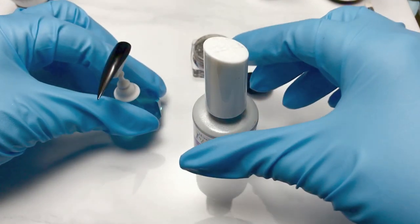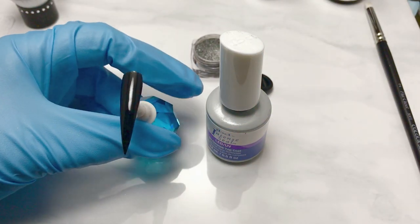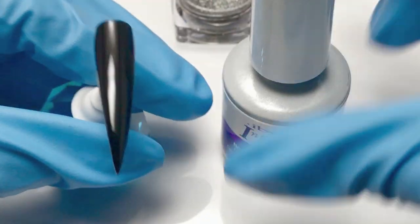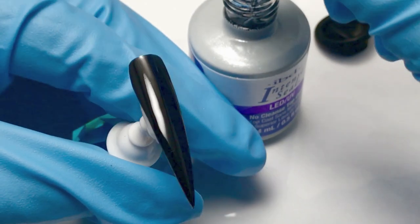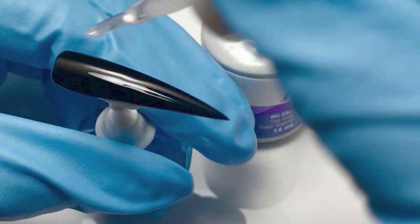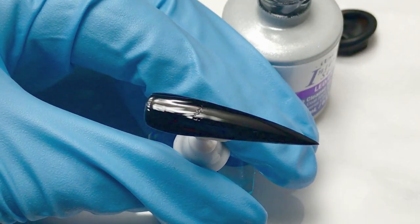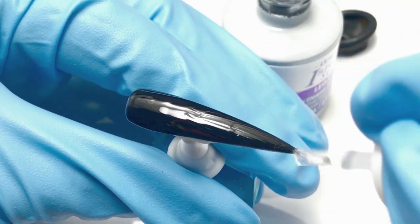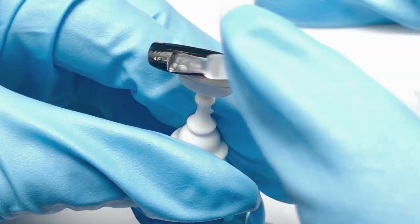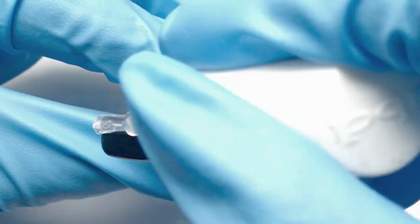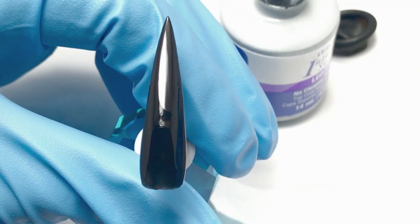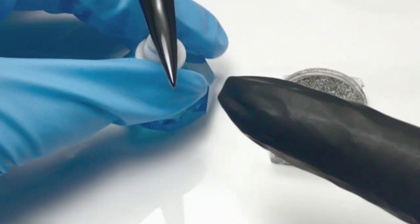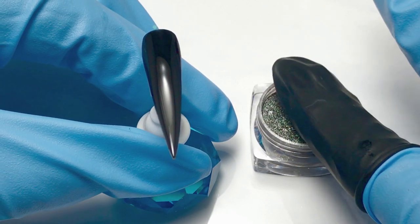So as with any chrome you will need a no wipe top coat, so get a good even coat. Make sure that you have any hairs or imperfections out of your surface. Again with any chrome, all those little imperfections will show up once your pigment goes down on the nail. And this IBD Intense Seal cures for 30 seconds in an LED.